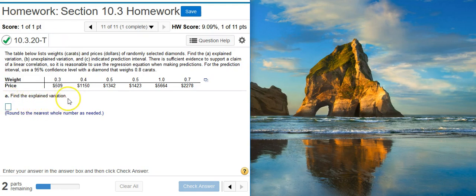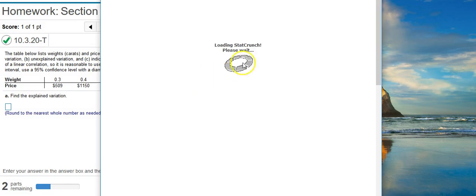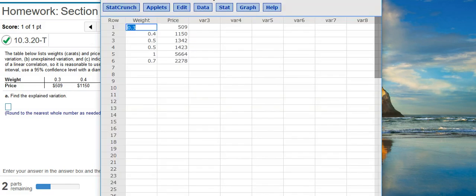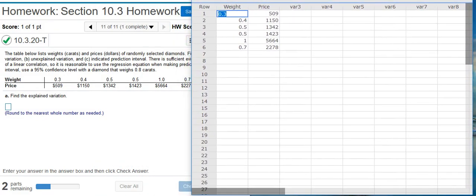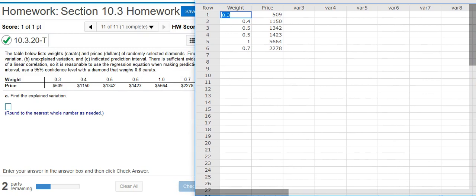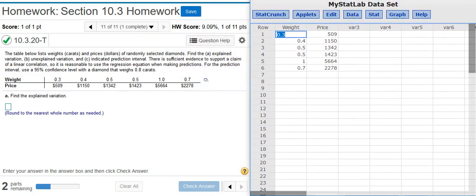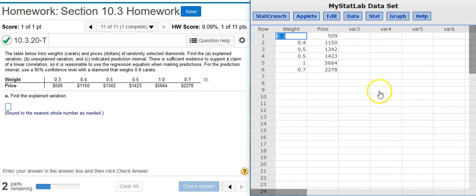Part A wants us to find the explained variation. This is a quantity that we find in the ANOVA table, and to get the ANOVA table, we're going to have to perform linear regression analysis. So the first step is to get my data here and dump it into StatCrunch. Here's my data in StatCrunch, and now I'm going to resize this window so we can see everything a little bit better.